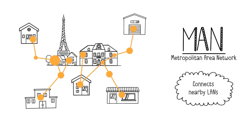Moving on to MAN, or Metropolitan Area Network, it connects several nearby LANs as if they were part of a single local network. Essentially, a MAN covers an entire city with local network technology. MANs consist of switches or routers linked through high-speed connections, often fiber optic.